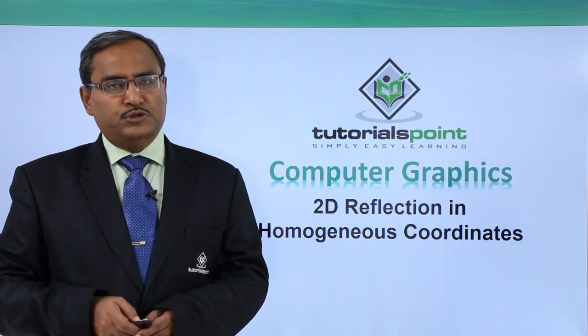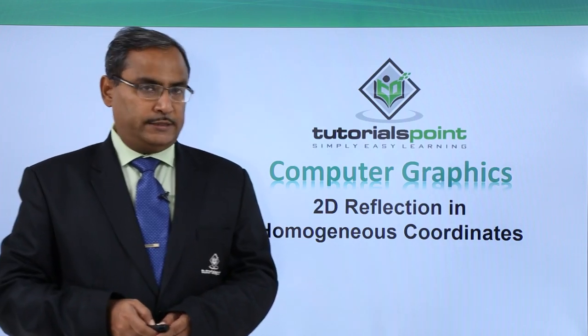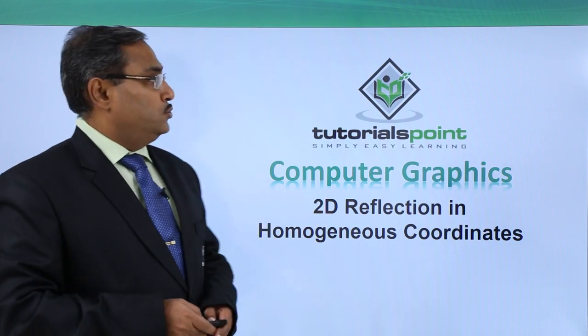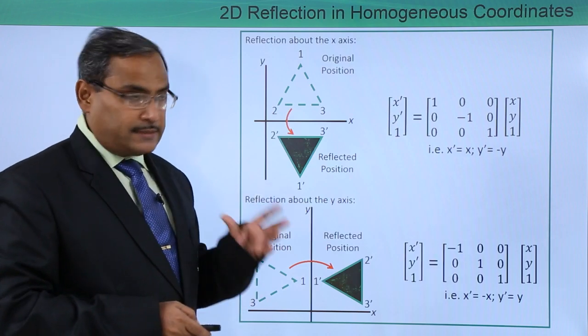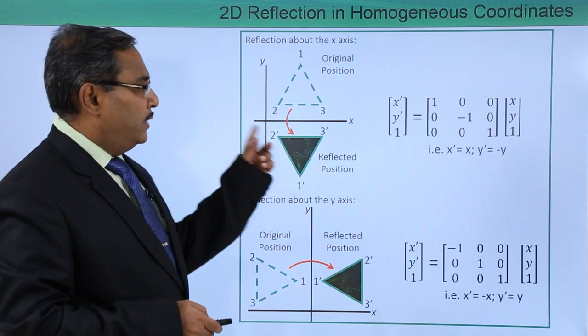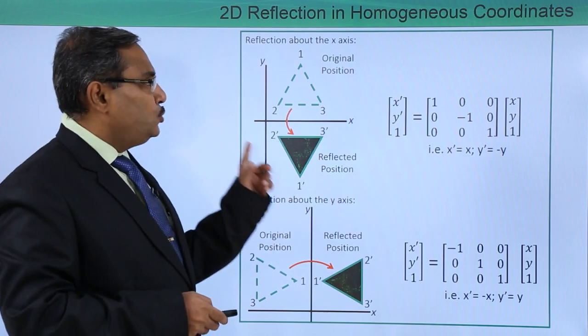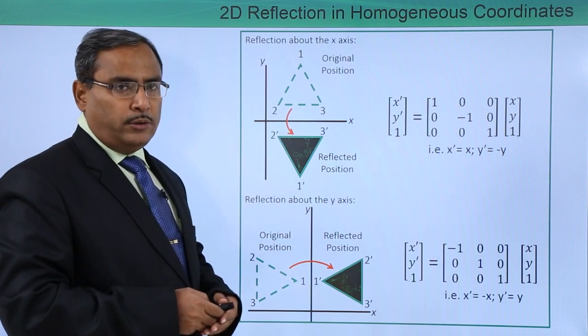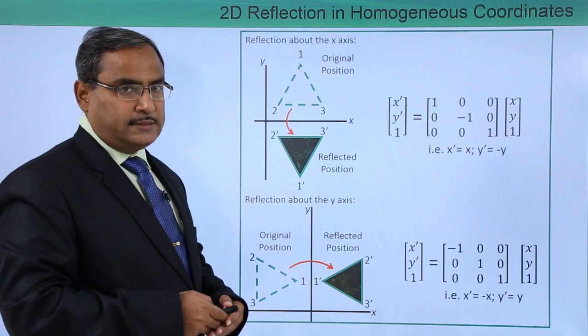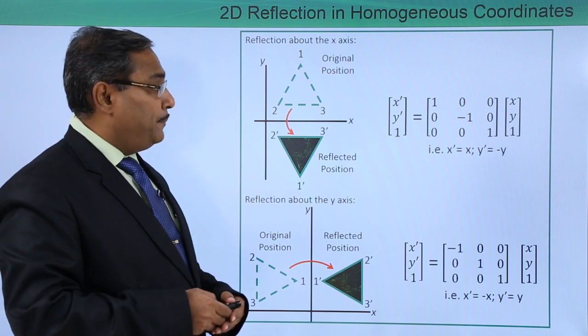2D reflection in homogeneous coordinates. Let us consider some cases. At first, we are trying to do the reflection along the x-axis. Then what will happen?